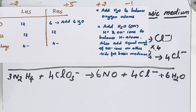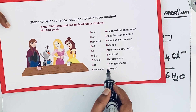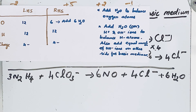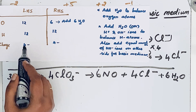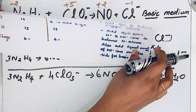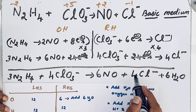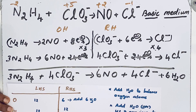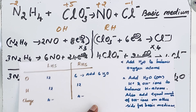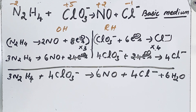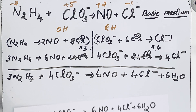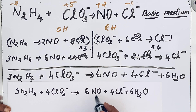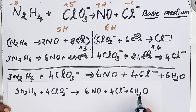Now let us check the final step: charge. On the left hand side we have 4 minus charges (from 4 ClO3 minus). On the right hand side we also have 4 minus charges (from 4 Cl minus). Both sides have equal charges of 4 minus. The complete balanced equation for this redox reaction is: 3 N2H4 + 4 ClO3 minus → 6 NO + 4 Cl minus + 6 H2O.